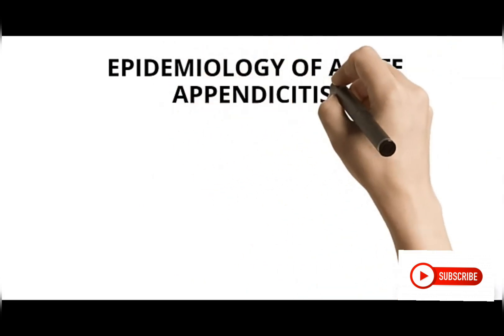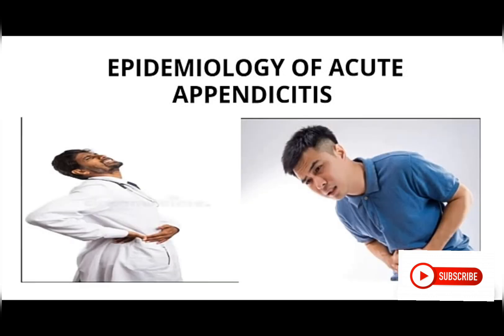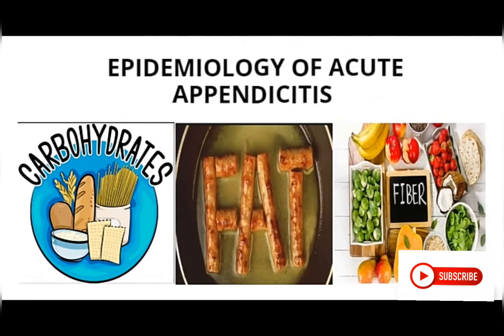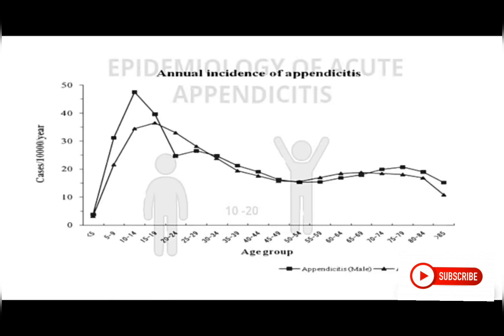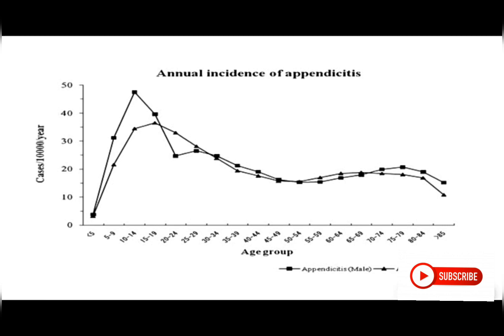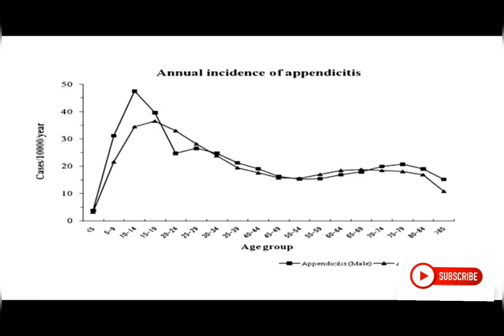A brief look at the epidemiological background: appendicitis is very common in white races, young males, and those on western diets — especially diets high in carbohydrate and fat content and low in fiber. It mostly affects individuals within the age range of 10 to 20 years. The graph shows higher recordings between ages 5 to 19, confirming that individuals within ages 10 to 20 are most highly affected.